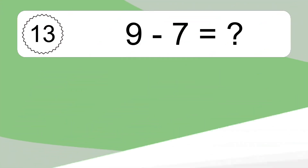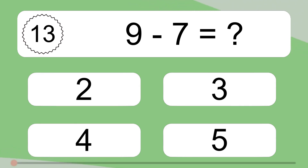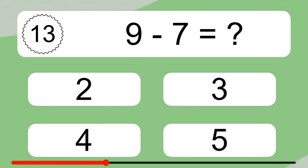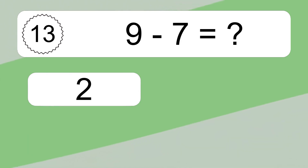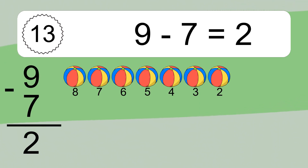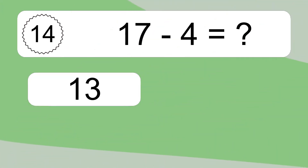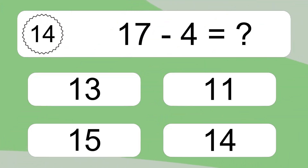9 minus 7 equals what? 9 minus 7 equals 2. Let's count it. 8, 7, 6, 5, 4, 3, 2.